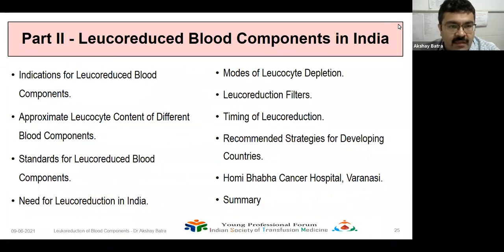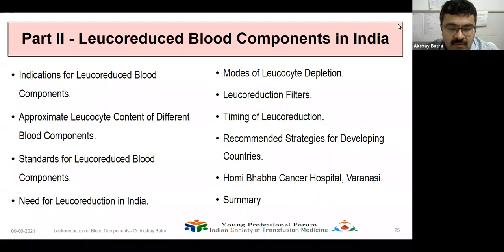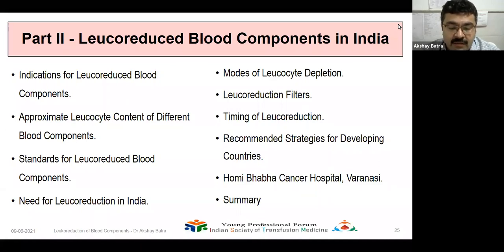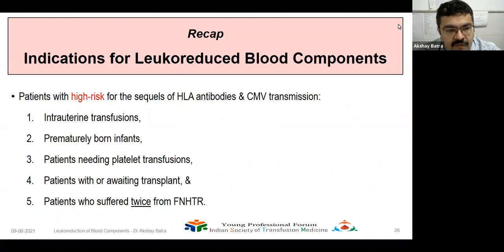In the next part I discuss leukoreduced blood components in the Indian setting: indications, approximate leukocyte content of different blood components, standards for leukoreduced blood components, need for leukoreduction in India, different modes of leukocyte depletion, types of leukoreduction filters, timing, recommended strategies for developing countries, what we do at Homi Bhabha Cancer Hospital Varanasi, and a summary. The indications for leukoreduced blood components include prevention of HLA alloimmunization and CMV transmission, intrauterine transfusions, prematurely born infants, patients needing platelet transfusions, patients with or awaiting transplant, and patients who have suffered FNHTR twice.